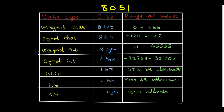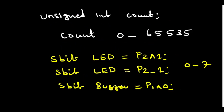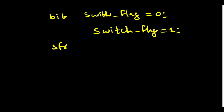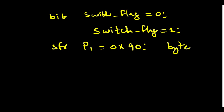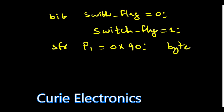Next is sfr. SFR is a one-byte type. For example: sfr P1 = 0x90. The SFR registers are byte-addressable only — not bit-addressable. The 8-bit port registers — port 0, port 1, port 2, port 3 — can all be accessed using sfr. These are the 8051 microcontroller data types, and knowing these will make it easy to develop code.